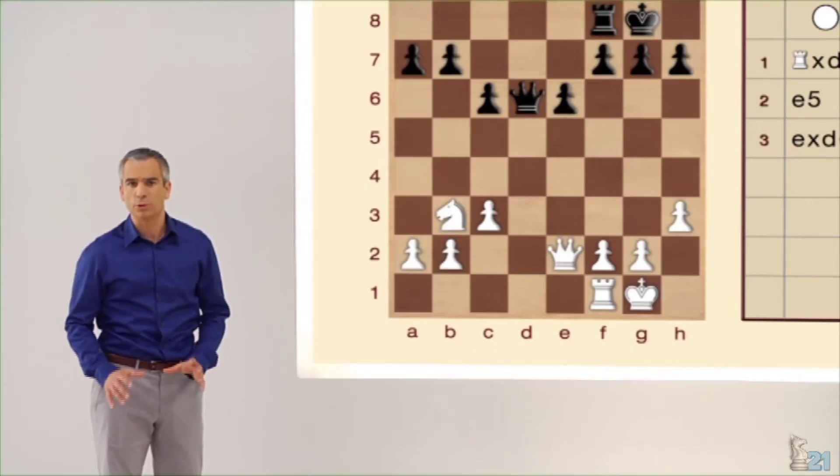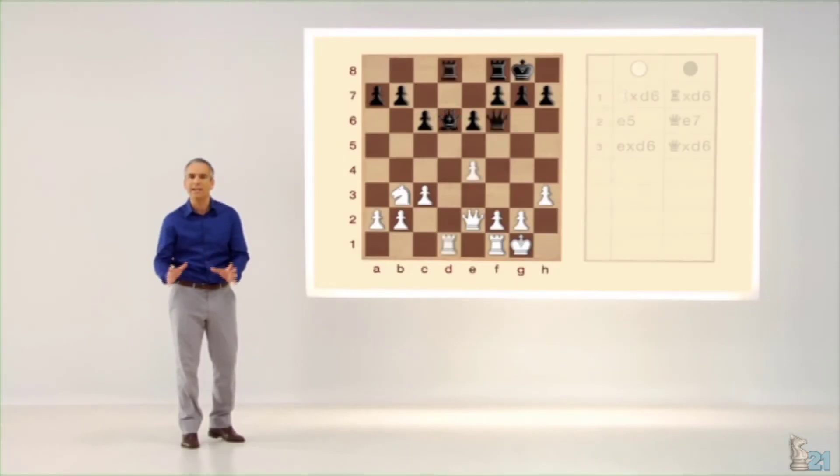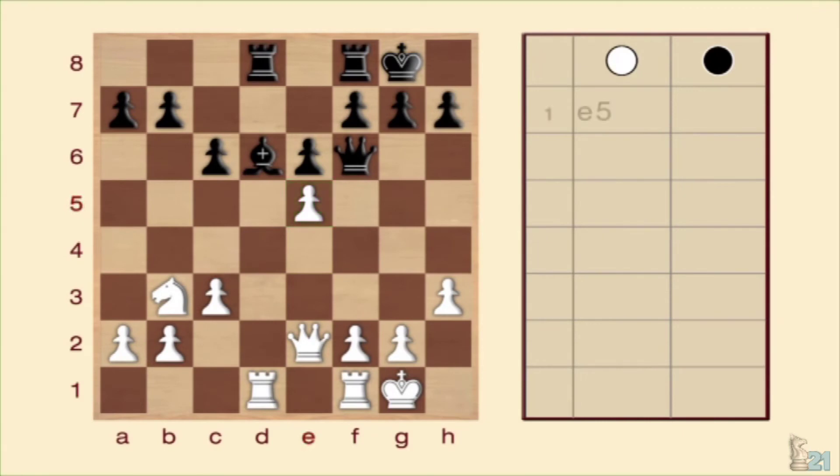Seguro que muchos de vosotros os estaréis preguntando por qué no realizar un ataque doble directo en el primer movimiento. Volvamos a la posición inicial y comprobemos por qué no. Si avanzamos directamente el peón a E5, alfil y dama podrían tomarlo sin problemas. De manera que las blancas habrían hecho un ataque que podríamos catalogar de suicida, perdiendo el peón. Felicidades a quien haya dado con la respuesta correcta.